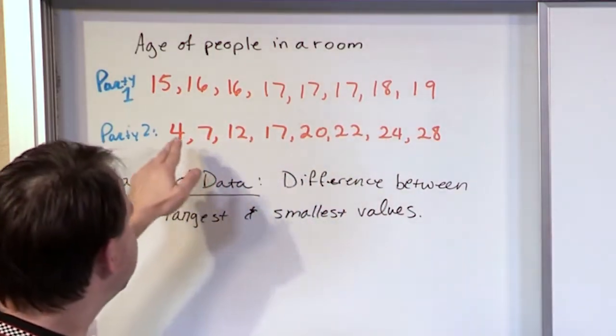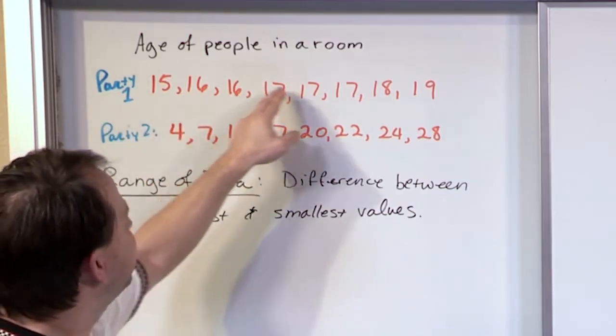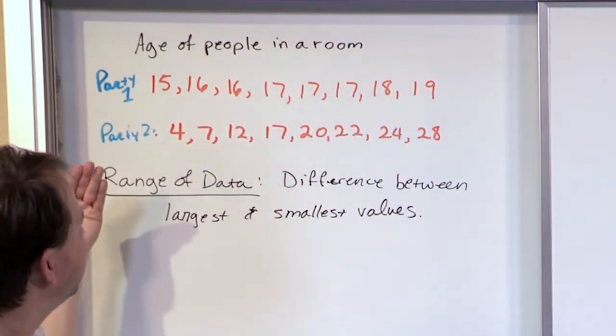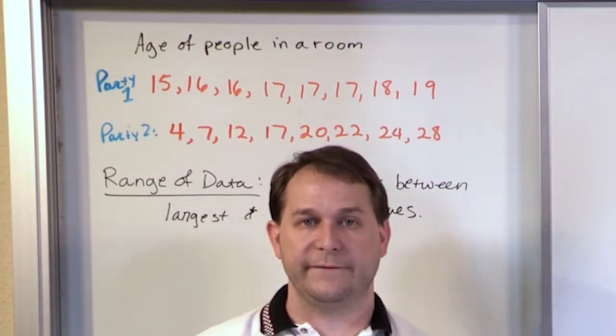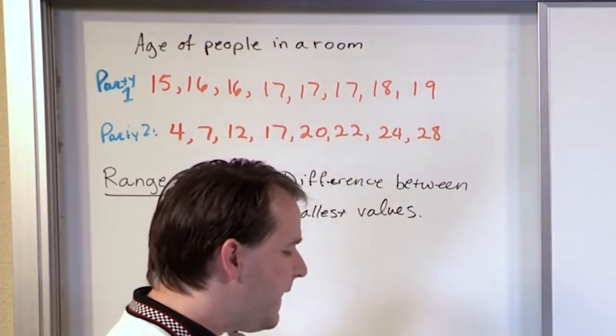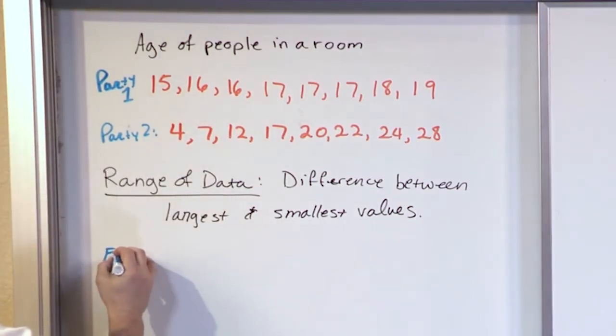So clearly if we do a difference between this guy here, we're going to get a number and a difference between these endpoints here, then we'll be able to tell that party number 2 is the one that's more spread out. And that is a really quick and dirty way to figure out what data is more spread out.